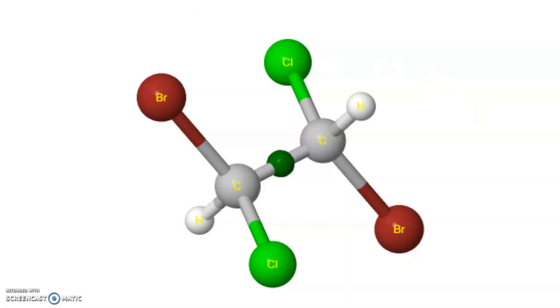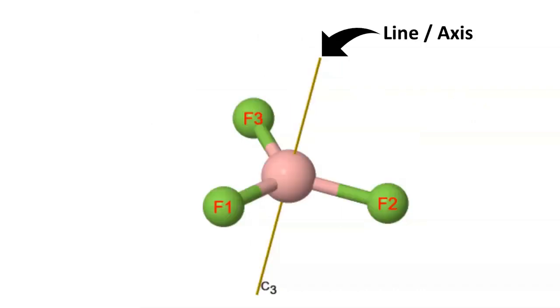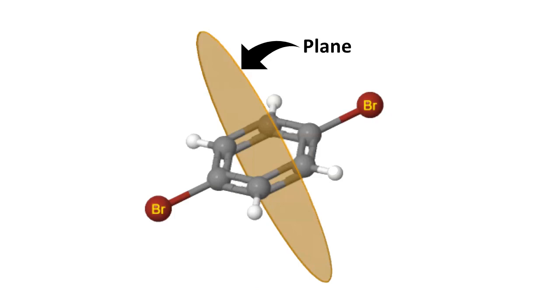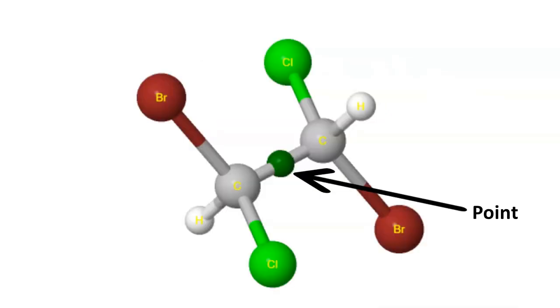From all these three examples, you might have seen that the symmetry operation is performed through different geometrical entities. For example, in the first case, the operation was carried out through a line or an axis. And in the second case, the operation was done about a plane. Whereas in the last example, the operation was carried out about a point. These geometrical entities are called symmetry elements.